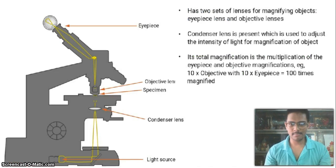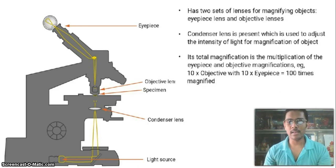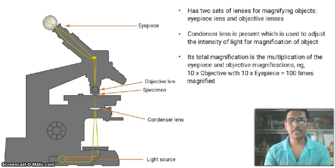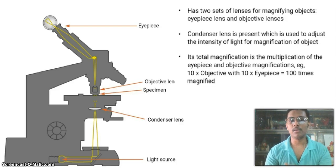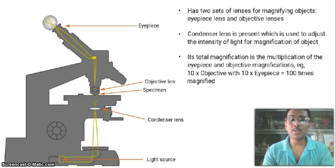Microscopy is a technique used with instrumentation to magnify your specimen so that you can see it with your naked eye. You can't see a specimen with your naked eye, so you use a microscope to magnify it — whether it's cellular, material chemistry, or any biomaterial. It has wide applications in bio-imaging, cell biology, and material chemistry.